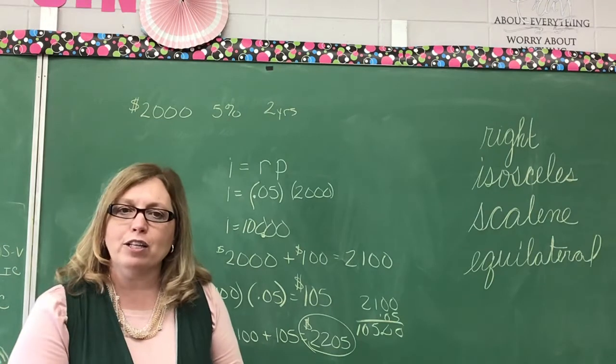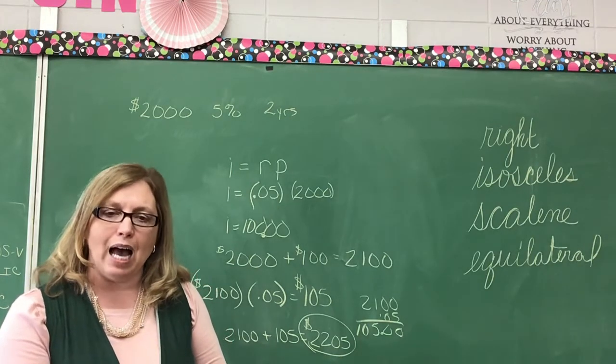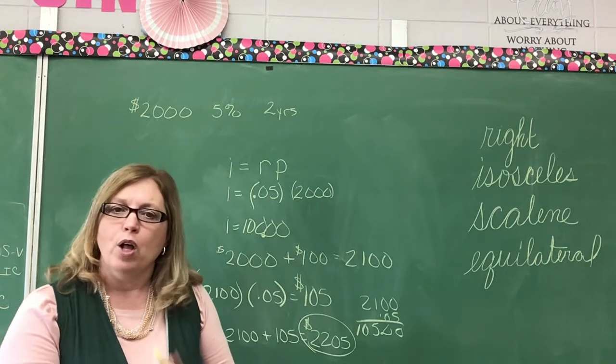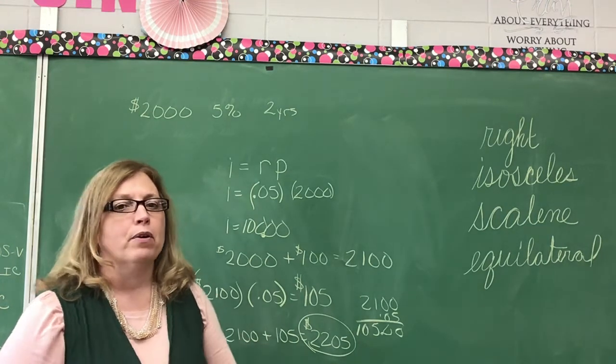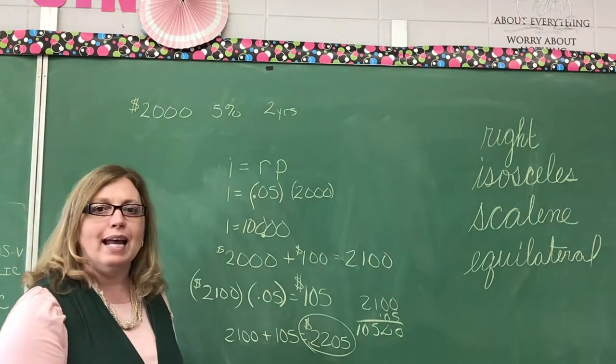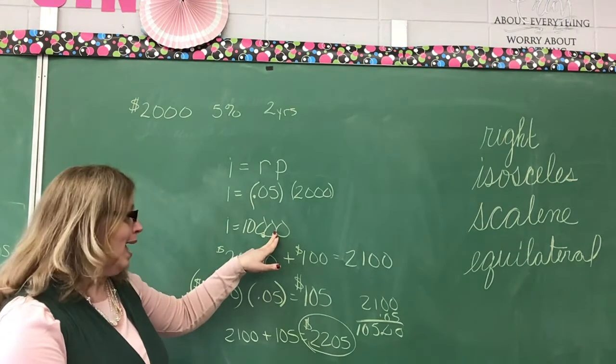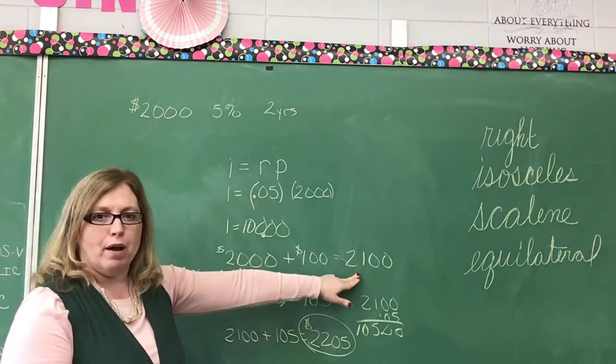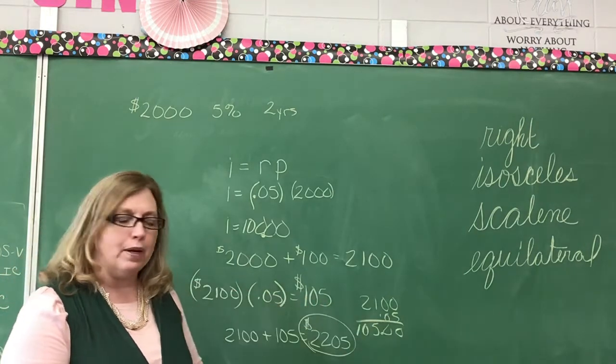How do you find interest? First, interest equals the rate times the principal. The principal means the amount of money that you're putting in. If it's compounded annually, take that interest you earn, add it to the amount you had to get your new amount. Use that amount to start your second year.